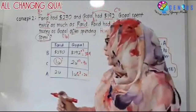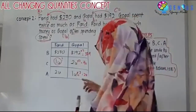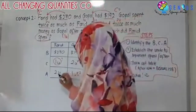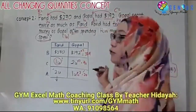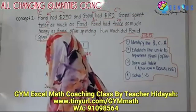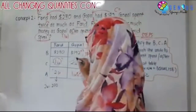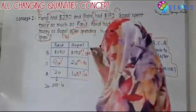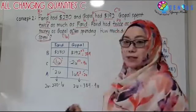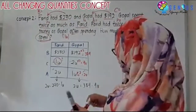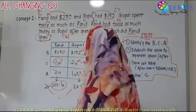We are not done yet. We look at the equalized row — the after row. To get these two units for Farid: $270 minus one unit. To get the two units for Gopal: $384 minus four units. Since both two units are equal, these expressions are also equal.